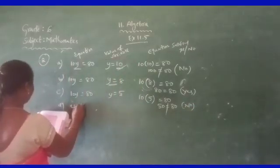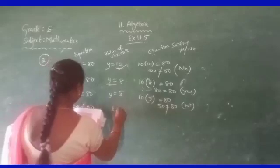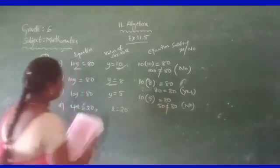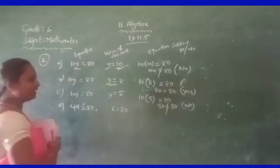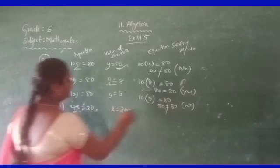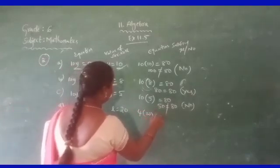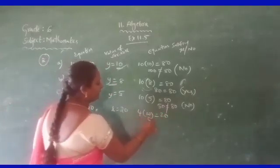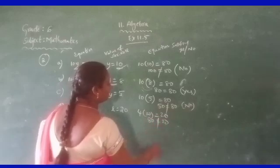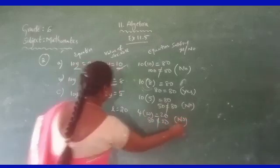D: 4L is equal to 20. L value is 20. Substitute: 4 times 20 is 80. Is 80 equal to 20? No, it is not satisfied.